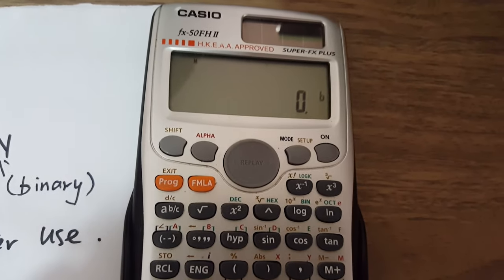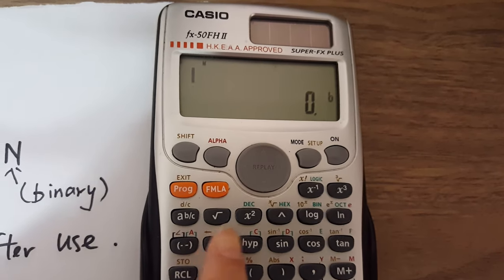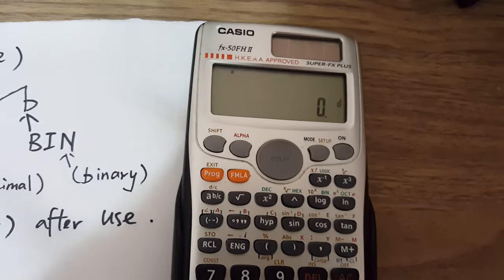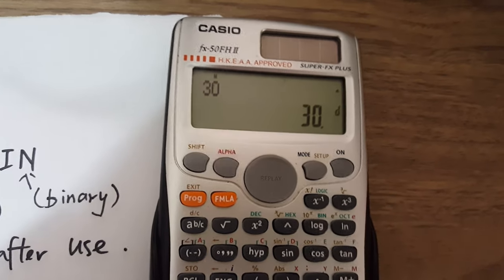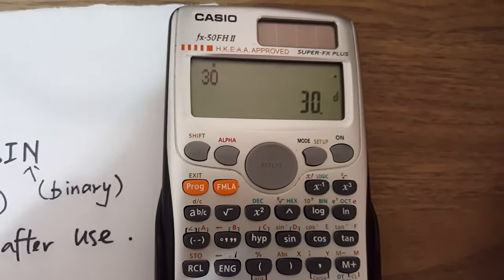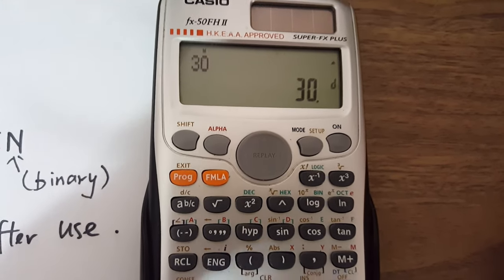Now I will show you how to do the questions. For example, I give you 30, and I tell you that this one is in the denary system. Now I want you to change it to the hexadecimal system or the binary. What should you do?